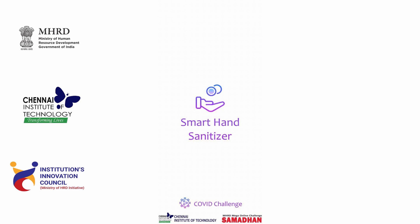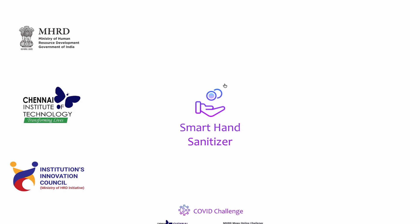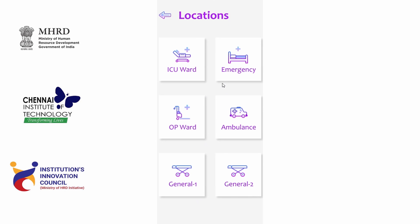Let me explain the mobile application procedure. Initially, when we open the mobile app, it shows all the places where the dispenser has been placed — for example, ICU ward, emergency ward, and outpatient ward.